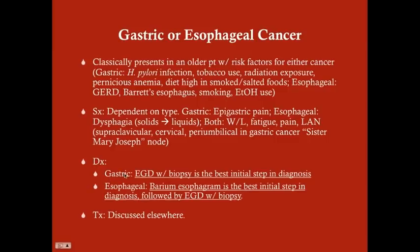For diagnosis: gastric cancer is diagnosed with EGD with biopsy — the best initial step. Esophageal cancer is a little different: barium esophagram is the best initial step because we're concerned about perforation and want to know where the cancer is before inserting the endoscope. After the barium esophagram, we follow with EGD and biopsy. Treatment of these cancers is addressed in other sections.